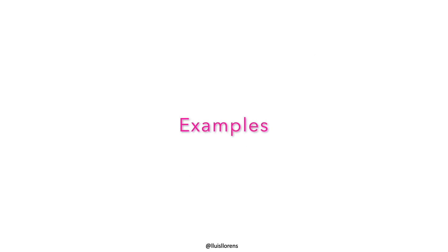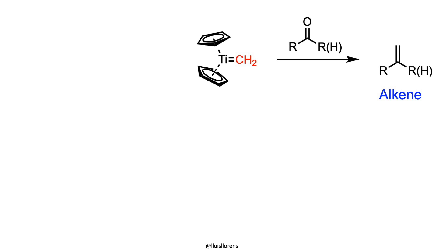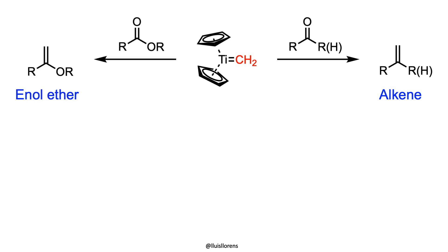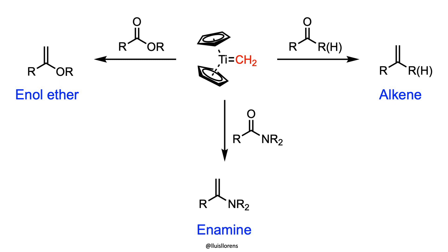Methylenation reactions occur for aldehydes and ketones, as well as esters, lactones, and amides. The Tebbe reagent converts esters and lactones to enol ethers, and amides to the corresponding enamines. In compounds containing both ketone and ester groups, the ketone selectively reacts in the presence of one equivalent of the Tebbe reagent.